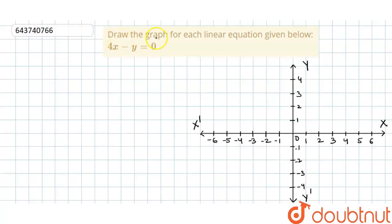So in this question we have to draw the graph of the linear equation that is 4x minus y is equal to 0. First of all I will write down the equation so that is 4x minus y is equal to 0.